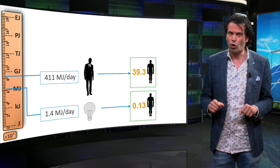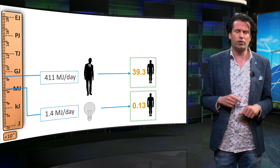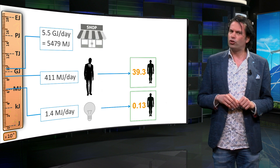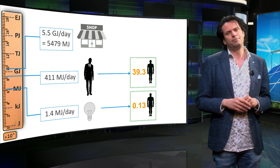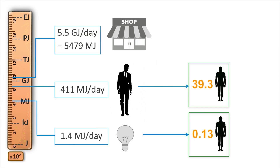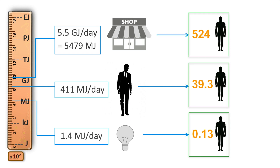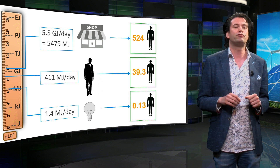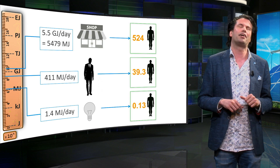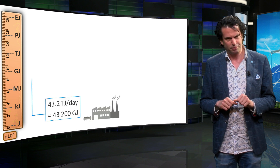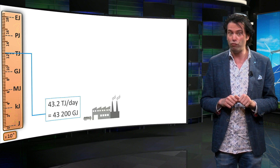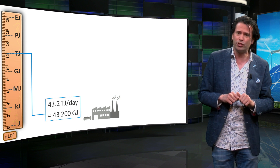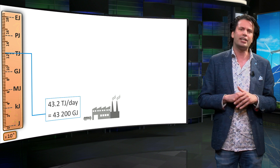This means that the average European person consumes almost 40 times the amount of energy required to sustain oneself. This figure naturally depends on standards of living and is different for each person. The consumption of a small bookshop is an order of magnitude higher. The average bookshop consumes over 5400 megajoules, or 5.5 gigajoules of energy per day. This is the equivalent of 524 human units. Thus, every day the average bookshop uses enough energy for you to sustain yourself for almost a year and a half. Moving further up the scale, we come to the next order of magnitude.